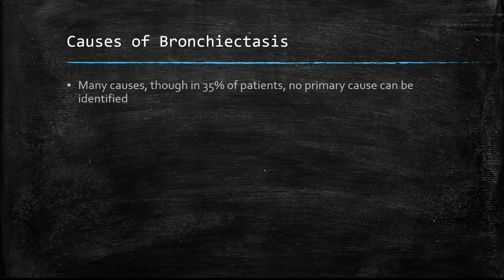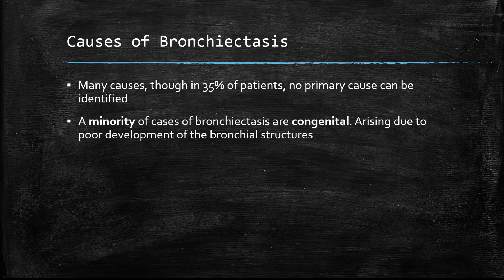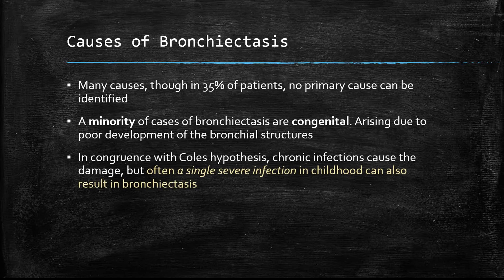What are the causes of bronchiectasis? There are many, many causes, though in about 35% of patients no primary cause can be identified. A minority of cases are congenital and are due to malformations of the bronchial structures. With Cole's hypothesis in mind, chronic infections can cause the damage. Often, especially in a child, if a child develops a severe pneumonia, it can also result in bronchiectasis.